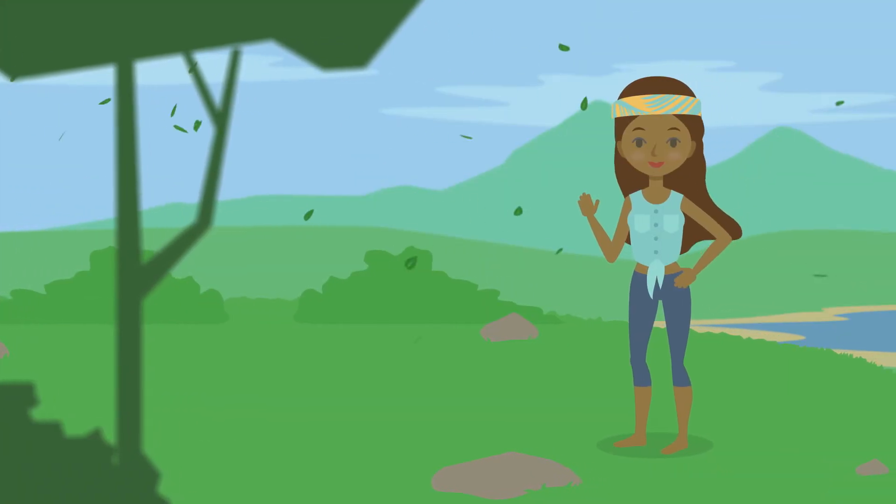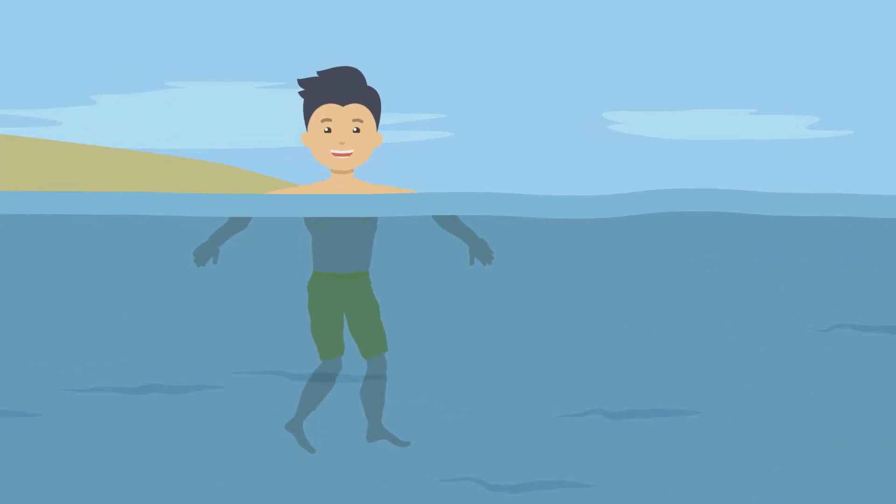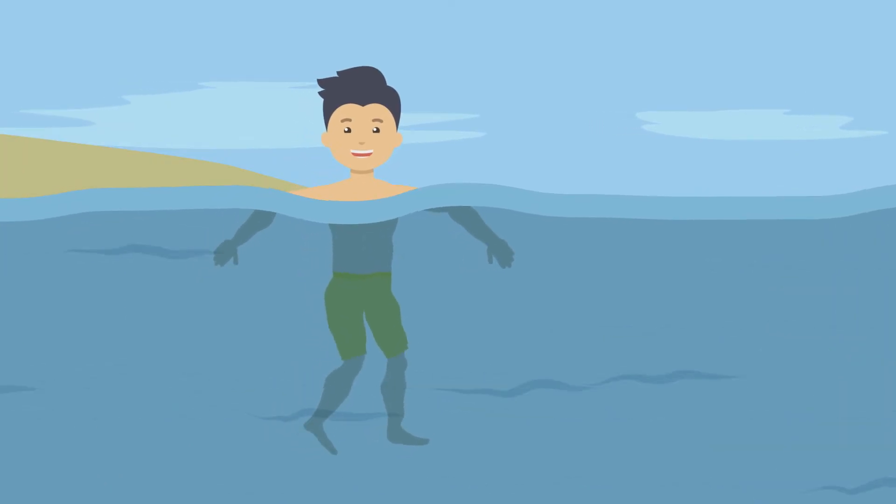When we stand outside, we will often feel the wind blowing against us. When we swim in the ocean, we may feel currents trying to push us away from our spot on the beach. We're going to talk about how these two fluids, the air and the ocean, move on a global scale and how this leads to different climate regimes around the world.